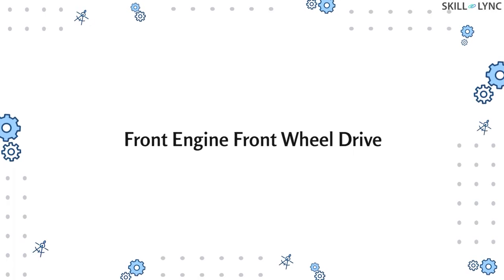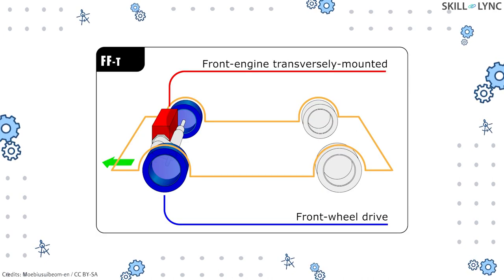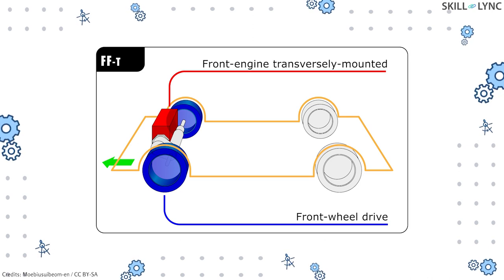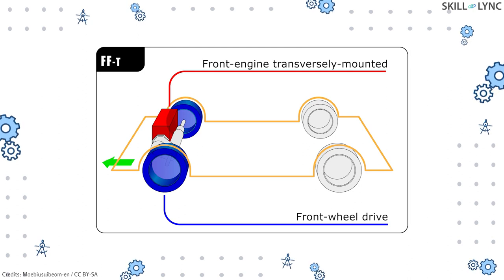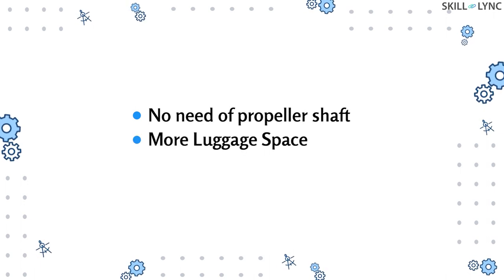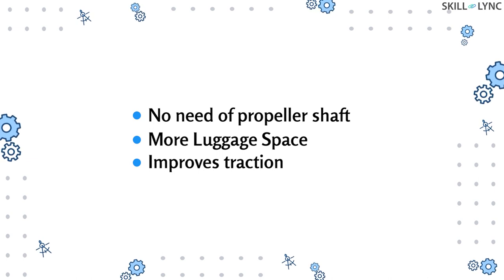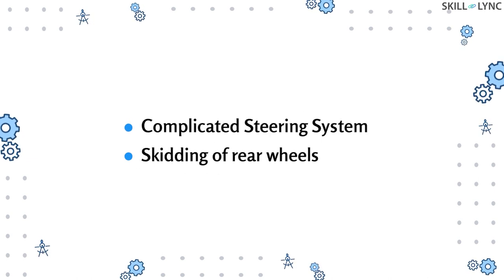The next type of layout is the front engine front wheel drive layout. It is completely opposite to that of the rear engine rear wheel drive. Here the engine is located at the front and the drive is given to the front wheels, so the front wheels have to perform both driving and steering actions. This type eliminates the need for a propeller shaft and affords more luggage space at the back. The engine on the front improves traction especially in corners and avoids skidding of the front wheels to a certain extent.